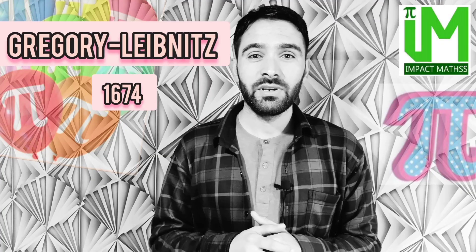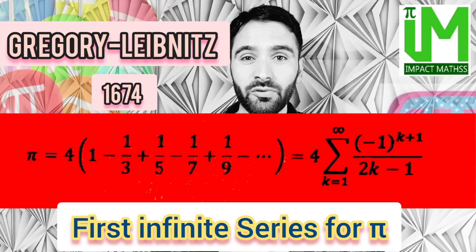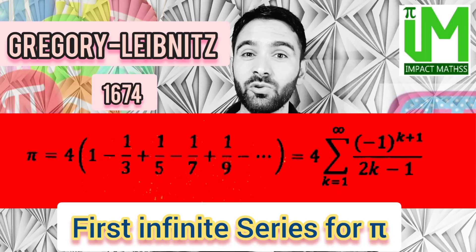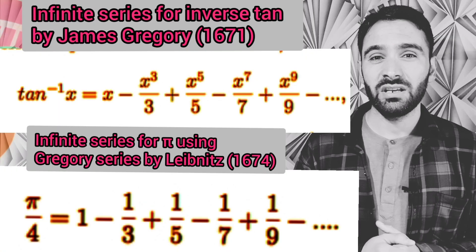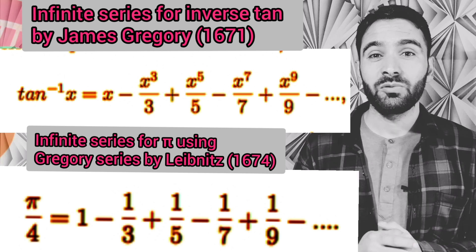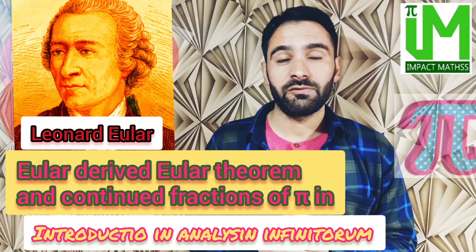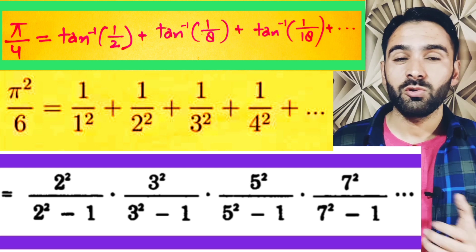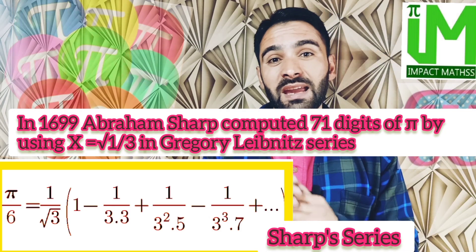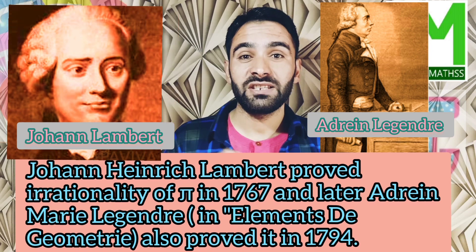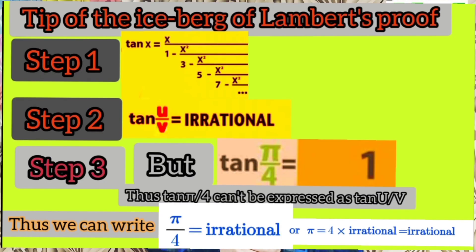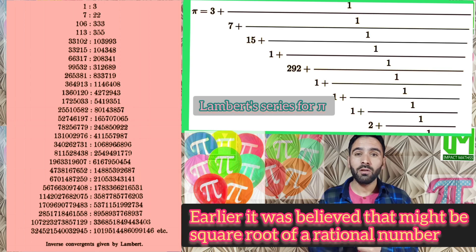The first-ever infinite series for pi was due to James Gregory and Gottfried Leibniz, called the famous Gregory-Leibniz series. In 1671, Gregory found the infinite series for inverse tangent, and three years later Leibniz found the inverse tangent series for pi. Euler, around 1750, derived many continued fractions for pi and pi-squared, laid the foundations for the irrationality of pi, and suggested pi to be transcendental. The irrationality of pi was formally established in 1767 by Johann Lambert, wiping all hopes that pi might be the square root of a rational number.